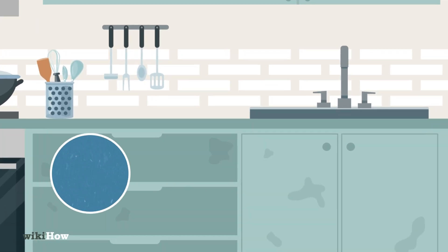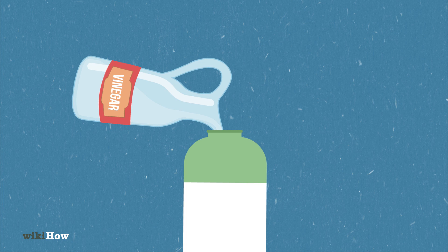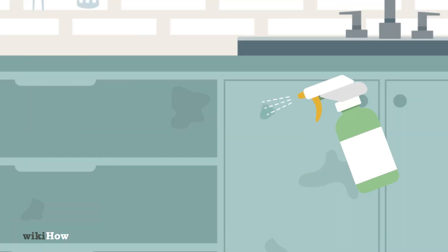To remove grease from your kitchen cabinets with vinegar, create a solution by mixing distilled white vinegar and warm water in a spray bottle. Test the solution on a small spot of your cabinet before applying it to the whole surface.